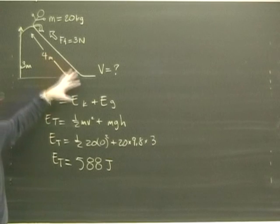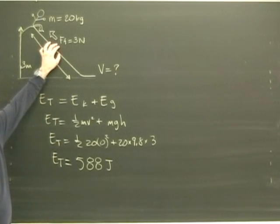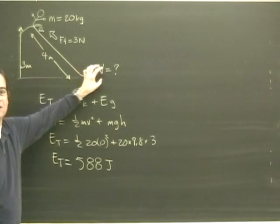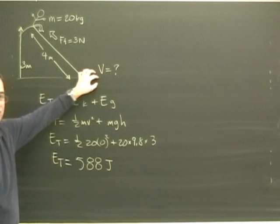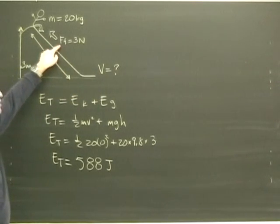Now usually the energy anywhere in the system is going to be constant, but here we have this friction. So when I get to the total down here, the total here is going to be the kinetic plus the gravity, and that's going to help us work out this velocity, but I've got to take off some energy because of this 3 newtons of friction.